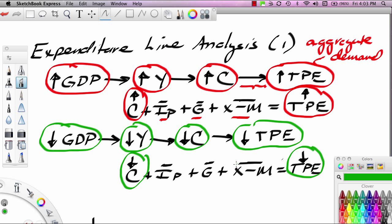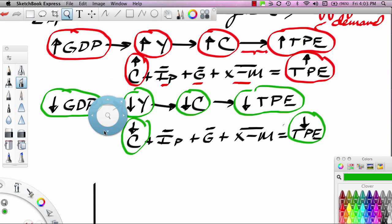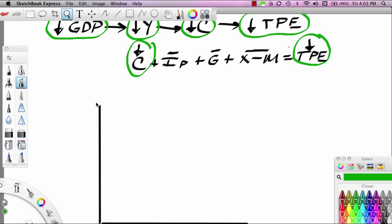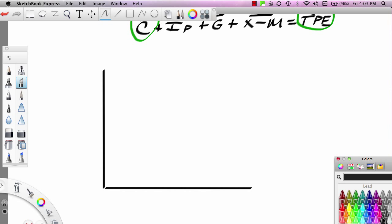Now these relationships can be illustrated using the expenditure line model. Here we have a two dimensional space and we'll put total planned expenditures on the vertical axis meaning it's the dependent variable. We'll put GDP on the horizontal axis meaning it's the independent variable. We can put a function in describing the relationship and it's an upward sloping function because when GDP goes up, TPE goes up. When GDP goes down, TPE goes down. We can label this line the expenditure line C plus I planned plus G plus X minus M. Notice this does not begin at the origin. This Y intercept here is called capital A.